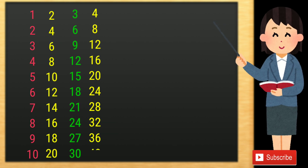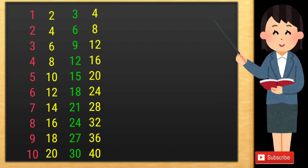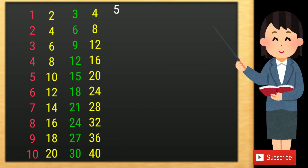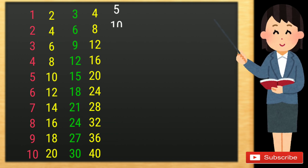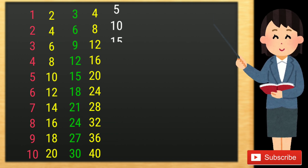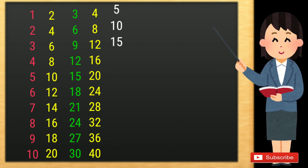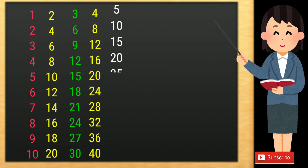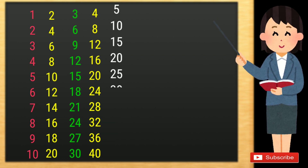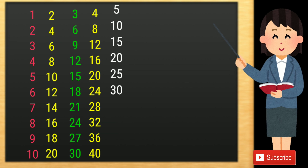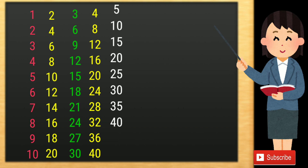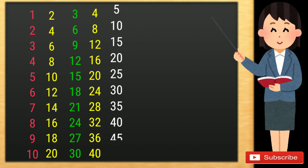4 10s are 40. 5 1s are 5, 5 2s are 10, 5 3s are 15, 5 4s are 20, 5 5s are 25, 5 6s are 30, 5 7s are 35, 5 8s are 40, 5 9s are 45.